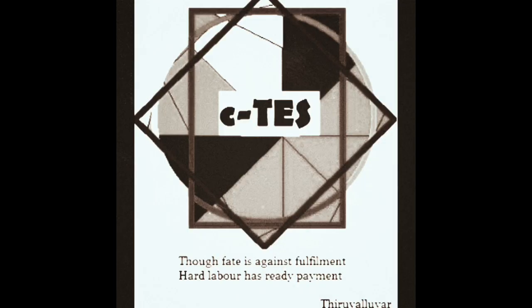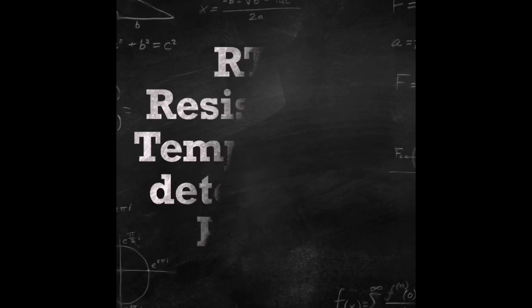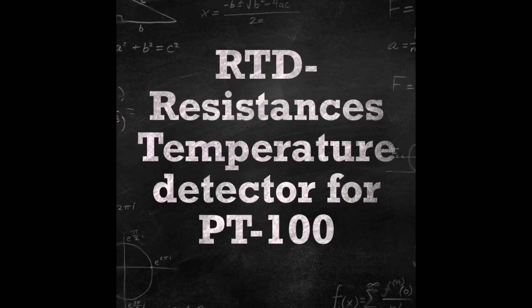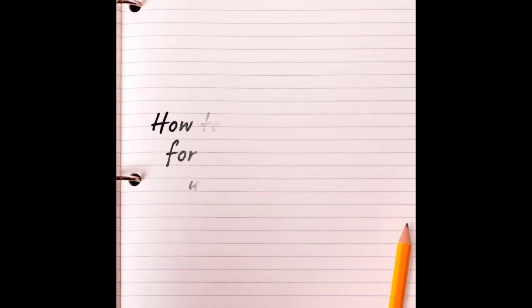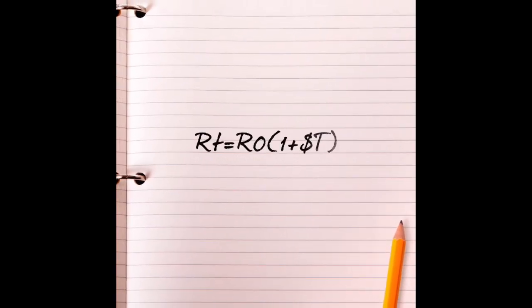One RTD sensor is PT100, which stands for Platinum 100. Now we are going to see the formula to calculate resistance for a particular temperature using PT100. The formula for PT100: RT equals R0 into 1 plus alpha T.